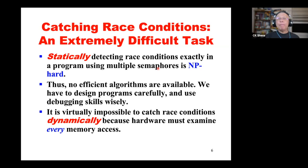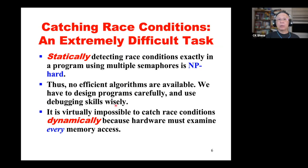Unfortunately, if your program uses multiple semaphores, this is a very difficult job. In complexity theory, designing such a race condition debugger program is NP-hard. Therefore, no efficient algorithms are available to take your source program, scan it, and pinpoint exactly where you have race conditions. As a result, the only way to avoid race conditions is to design programs carefully and use debugging skills wisely.